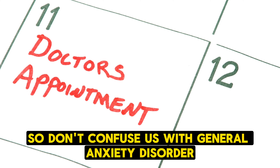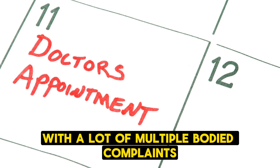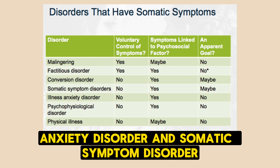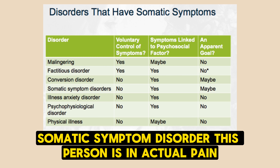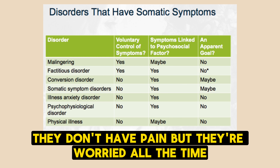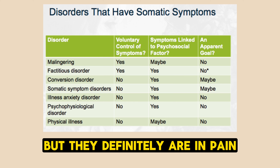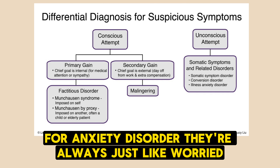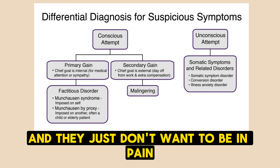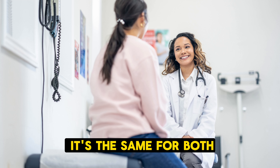Don't confuse somatic symptom disorder with generalized anxiety disorder. Somatic symptom disorder — the person is in actual pain. Illness anxiety disorder — no actual pain, but they're worried about getting a disease. Treatment is the same for both: regular visits with their family doctor.